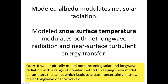Regarding the surface energy balance: solar and longwave radiation are our two largest forcings from the atmosphere. We determine incoming solar and longwave before running our snow model. Our modeled snow albedo modulates net solar radiation — how much is absorbed versus reflected — and our modeled snow surface temperature modulates net longwave radiation by controlling how much longwave is emitted back, as well as near-surface turbulent energy transfer.